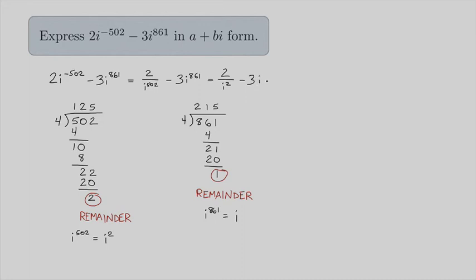Well, i squared is negative 1, so this is just the same thing as negative 2 minus 3i. And this is in a plus bi form, where a is negative 2 and b is negative 3.